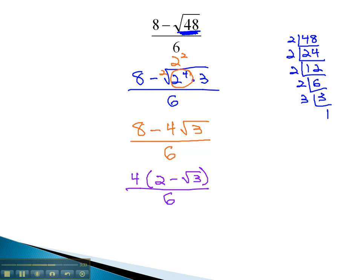And now that it's factored 4 times the parentheses, we can divide out of the 4 and the 6 a 2, leaving behind 2 and 3. We're left with 2 times 2 minus the square root of 3 over 3.